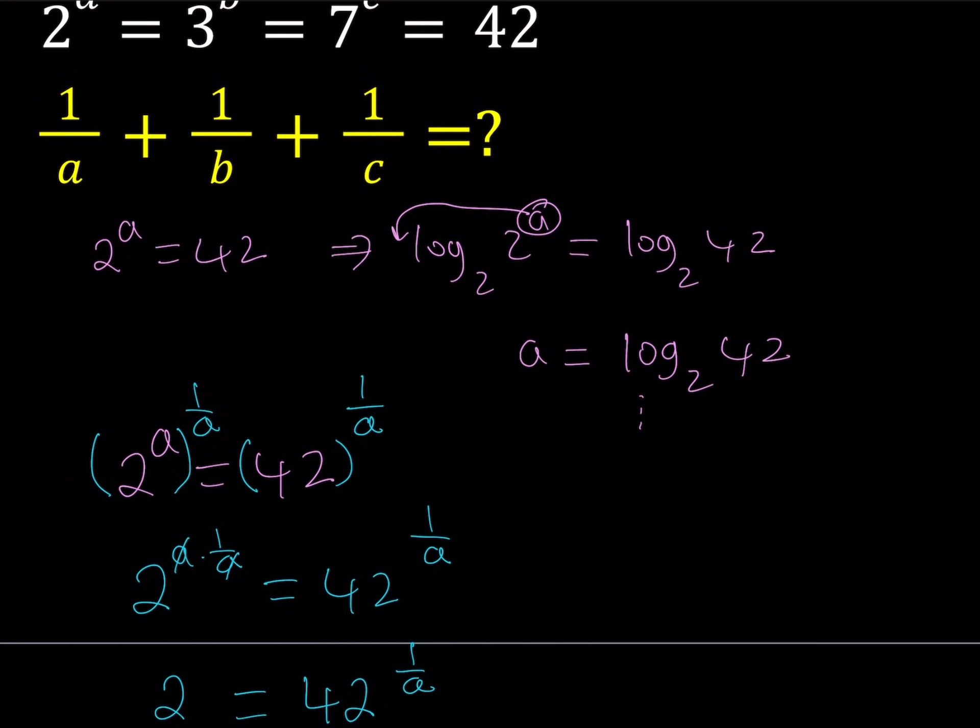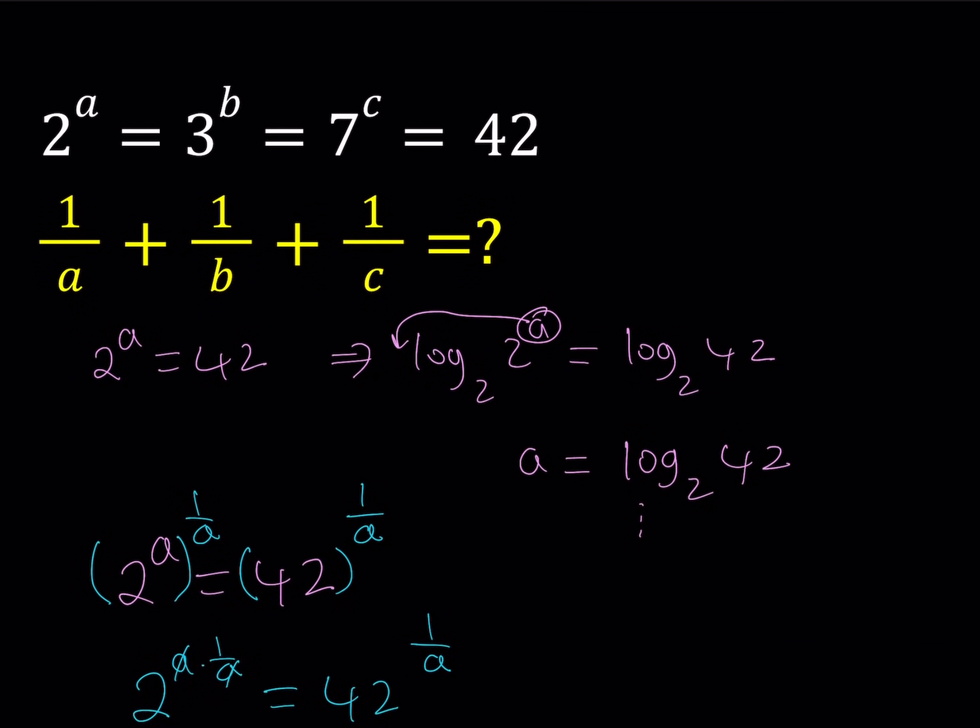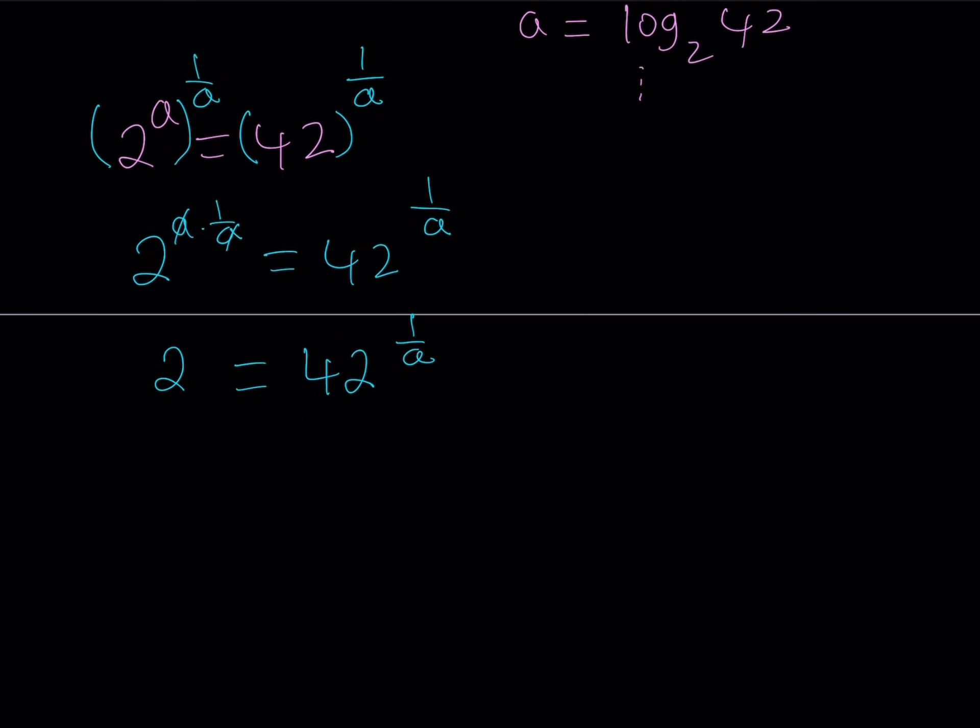So going by the same method, you can say that 3 equals 42 to the power 1 over B, and 7 equals 42 to the power 1 over C. So let's see what that gives us.